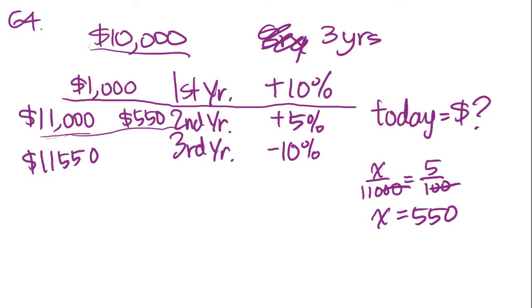This is the amount they have at the beginning of the third year, and the third year they lost 10%. What is 10% of $11,550? Again, we just lop off the last zero, so 10% is $1,155. Let's do a little subtraction. We get $10,395. Yes, it is one of the answer choices, answer choice B.